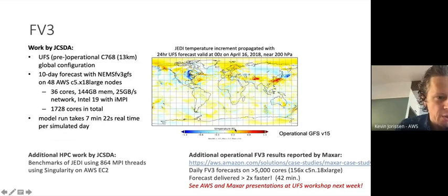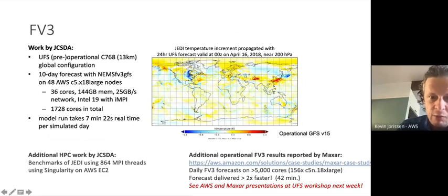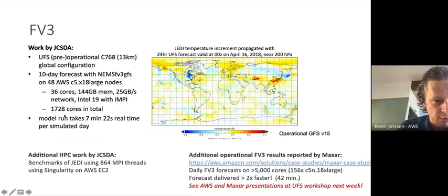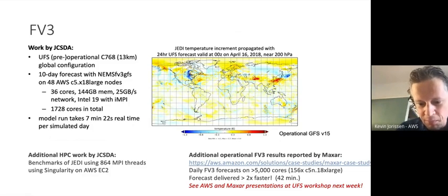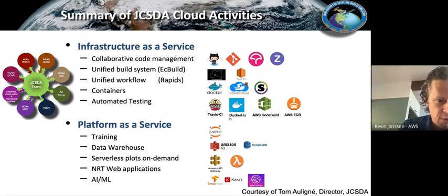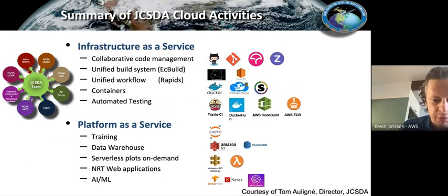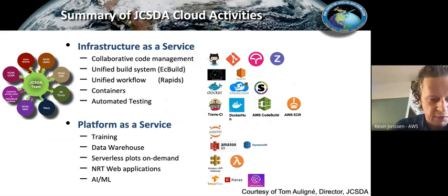On the FV3 front, we started doing work about a year and a half to two years ago with the Joint Center for Satellite Data Simulation. They took NOAA's daily high-resolution global forecast and replicated it on the cloud, proving it was possible to match NOAA's on-premise turnaround time with a 1,700-core cluster on AWS. Maxar has since taken that an order of magnitude faster by pushing the cloud beyond just matching the existing NOAA infrastructure.